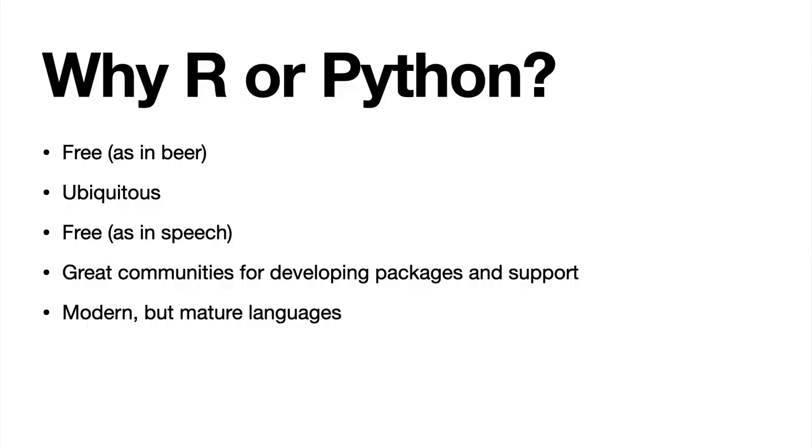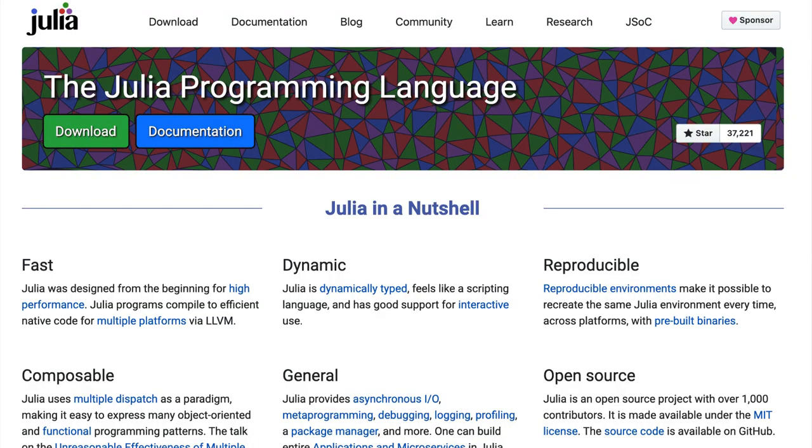R and Python are both modern yet mature programming languages. They've both been around for several decades and have a full set of features baked in, plus a universe of other packages. Other options like Julia are up and coming but not yet full-featured, without the big user community you'll find for R and Python. Similarly, Perl was popular in bioinformatics about 20 years ago but became stale and didn't continue to develop with the same packages and support.